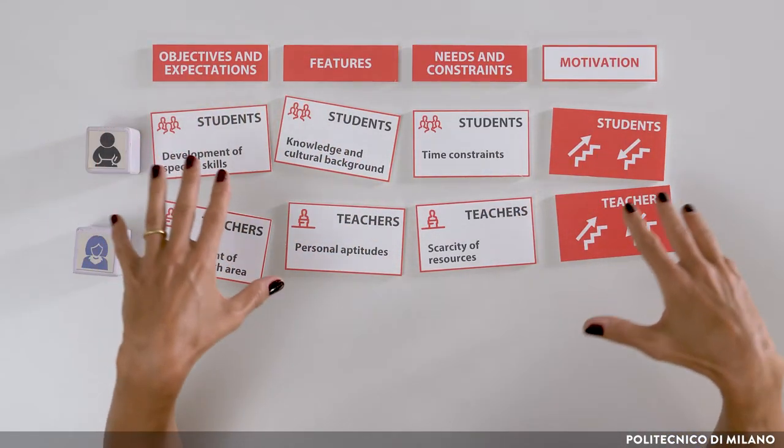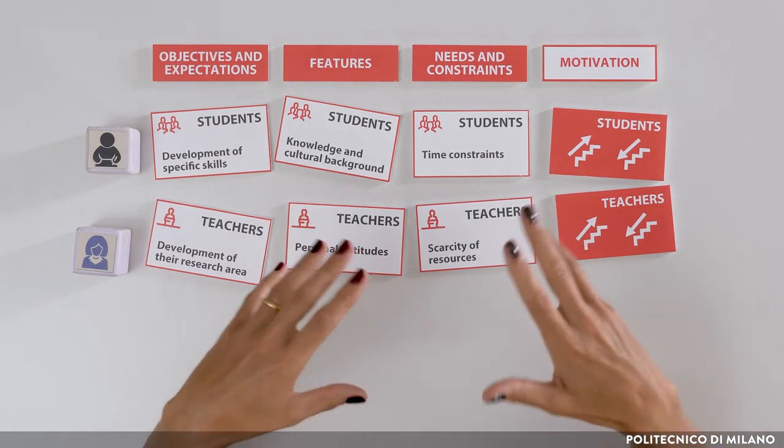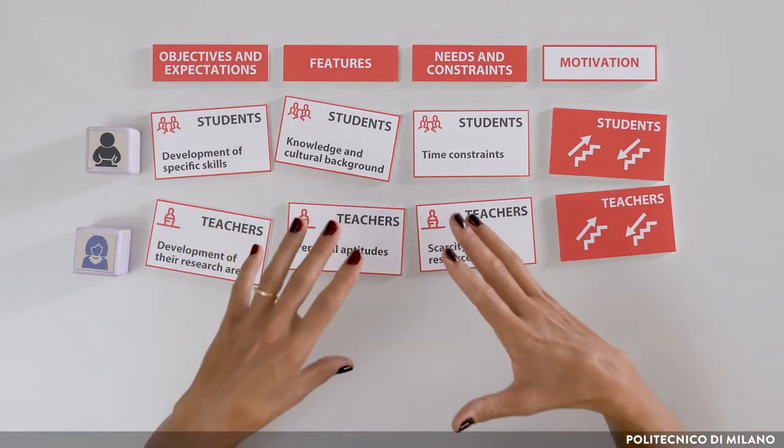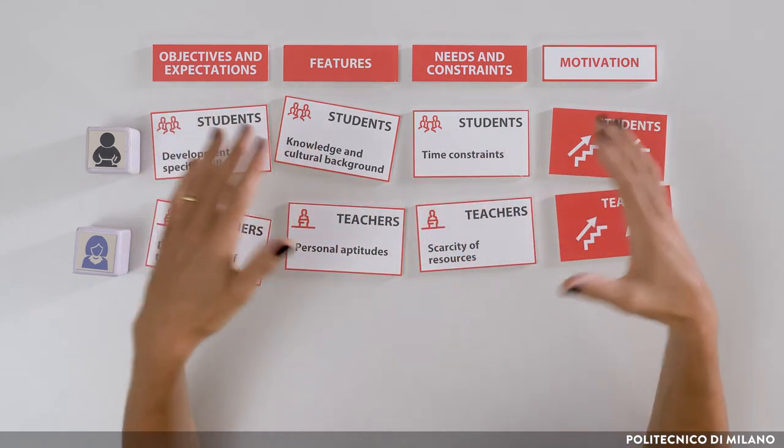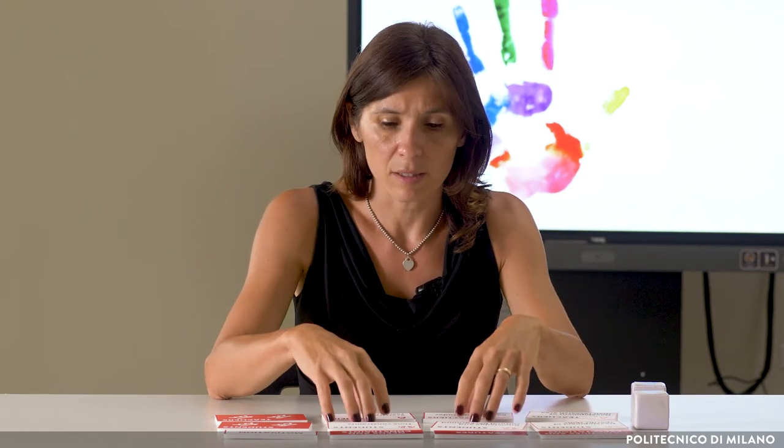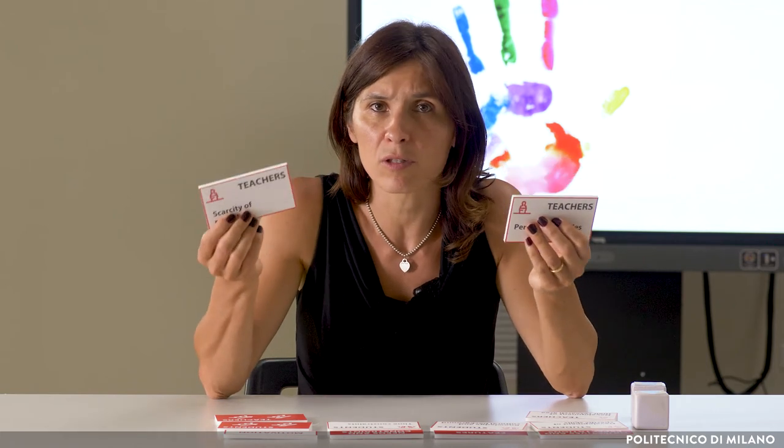Once we have created the map of the actors involved in the teaching and learning experience and we have described their main features in the inner cycle of our map, the teacher-designer can select some key aspects to keep in consideration during the design process. It is important to point out that it's not possible to satisfy all the expectations and needs that emerge during the design process. On the contrary, the advice is to select which aspects to focus on and to work on them.